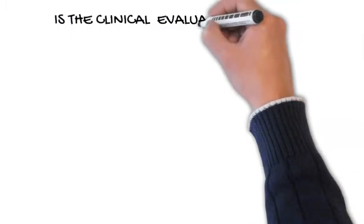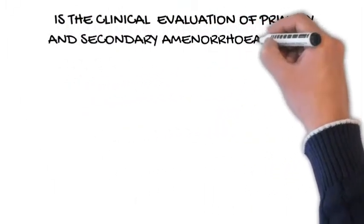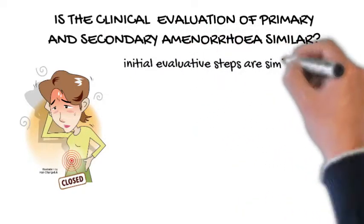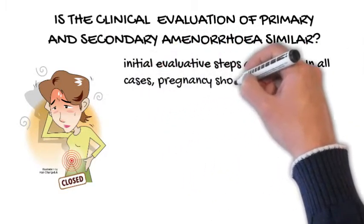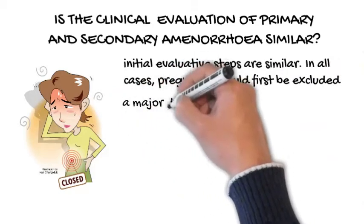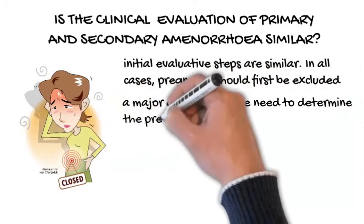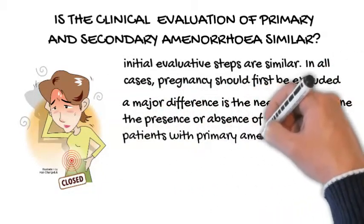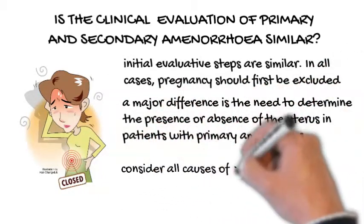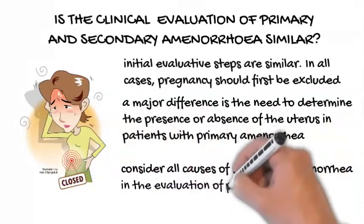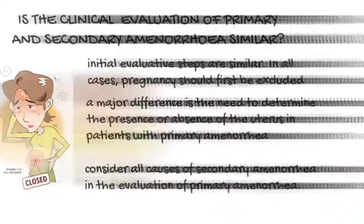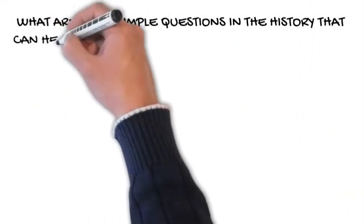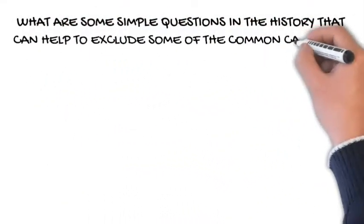Is the clinical evaluation of primary and secondary amenorrhea similar? The initial evaluative steps are similar. In all cases, pregnancy should first be excluded. However, a major difference is the need to determine the presence or absence of the uterus in patients with primary amenorrhea. It is important to consider all causes of secondary amenorrhea in the evaluation of primary amenorrhea.